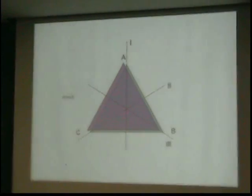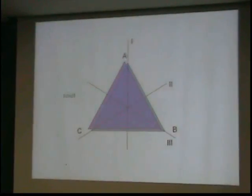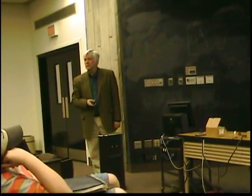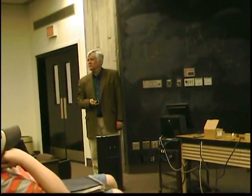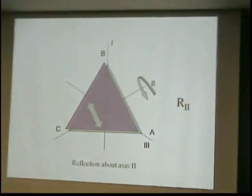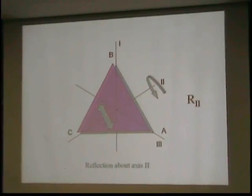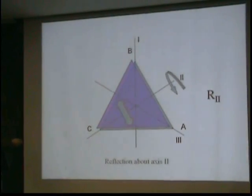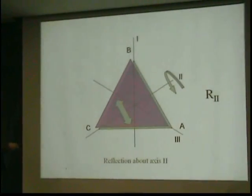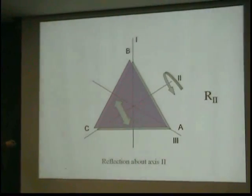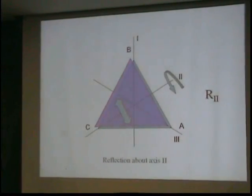What else can I do? Hit the reset button. Got two of them. How many more are there? What else can I do? Reflect about axis two. Boy, you read my mind. If I take axis two, I now reflect about that axis. It means I map every point on this side of the axis to an equivalent point on that and vice versa. And you see B and A are now interchanged, but C is the same.